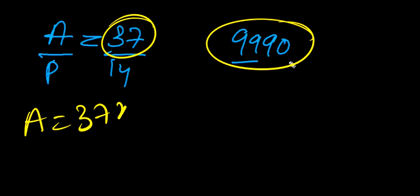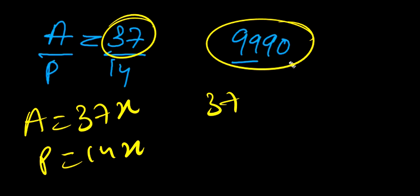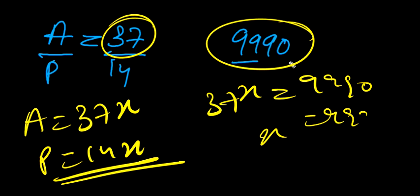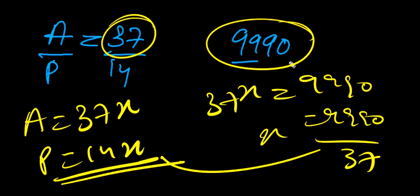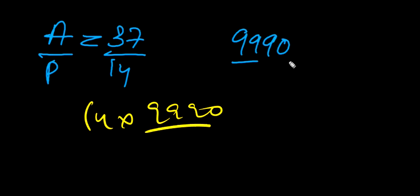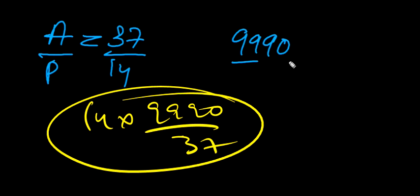So appeared is 37x — the total number of students appeared. The passed is 14x. So 37x equals 9990, and we solve for x. Since we need the number of students who passed, we substitute x back: the answer will be 14 times 9990 divided by 37 to get the number of passed students.